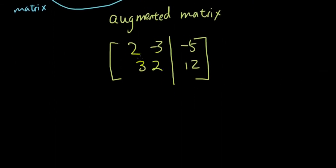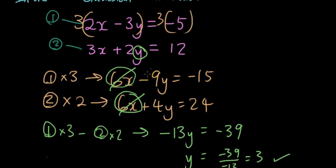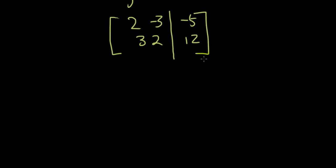So then I will get 2, negative 3, 3, 2. And I leave this out and I just put a line in the middle and I put negative 5, 12. So why do we leave this out? Because what we're about to do next, we don't require the second matrix. So what do we do now? So for Gaussian elimination, basically we do exactly the same thing as what we did for elimination.